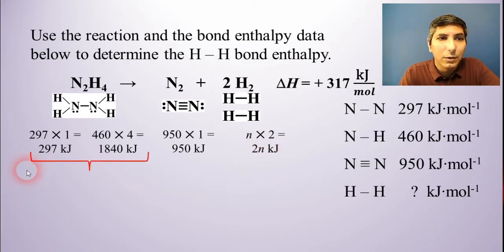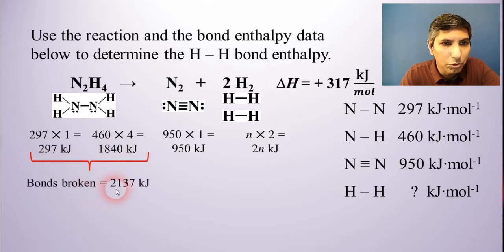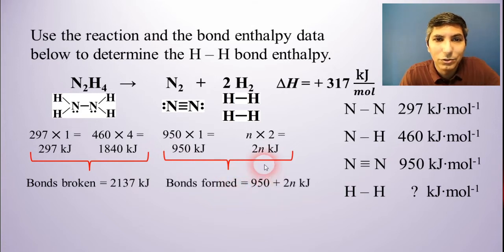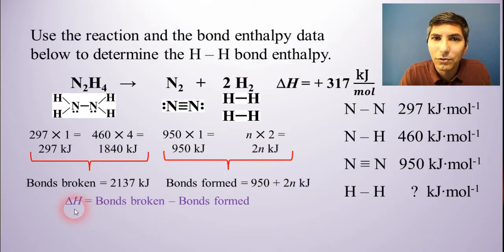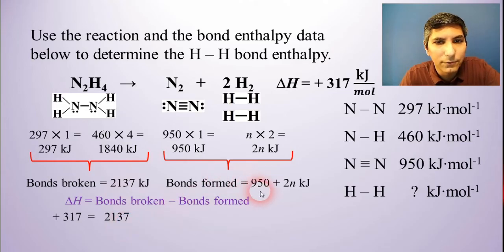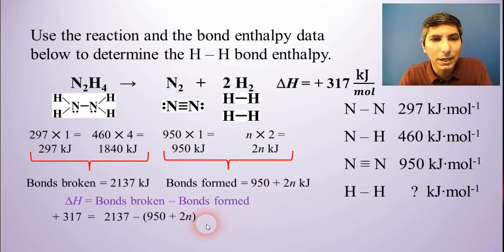Now, remember the equation. We take the sum of the bonds broken. So that's 2,137 kilojoules minus the bonds formed. So that's 950 plus 2N in this case. And bonds broken minus bonds formed equal delta H. Now, this time, the problem tells us what the delta H is. It's right here, 317 kilojoules per mole. So I'm going to plug that in right here. And then bonds broken, that's 2,137 minus the bonds formed. That's 950 plus 2N.